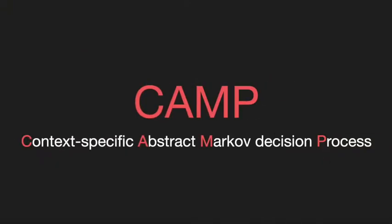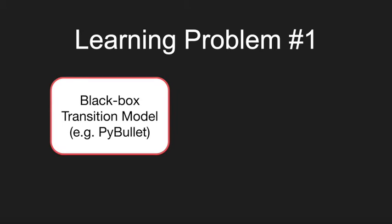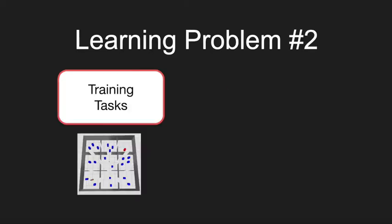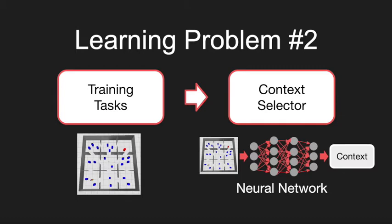We address two learning problems. One, given a black box transition model like a physics simulator to learn the context-specific independences. Two, given a set of training tasks, learn a context selector that predicts a good constraint to impose on a given task based on features of the task, like a top-down image of the scene in NAMO.